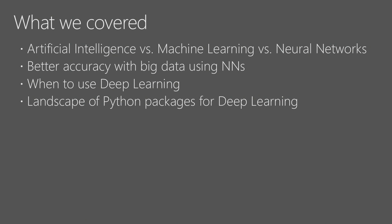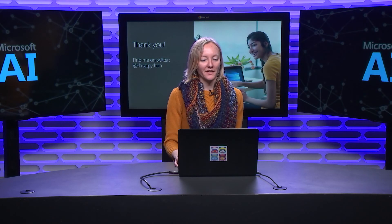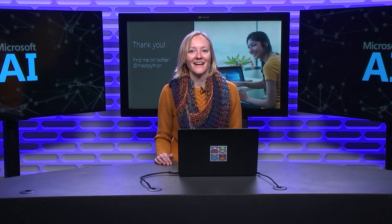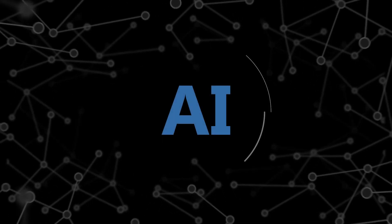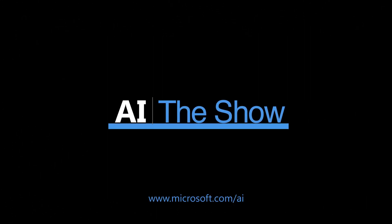Just to wrap up: artificial intelligence is the broad landscape; machine learning fits under that; then we have neural network architectures and deep learning algorithms that implement those architectures. We get much better accuracy with big data using neural networks. I showed you my lists of when to use classical machine learning versus deep learning, and introduced the Python packages for the deep learning space. I hope that was helpful — thank you so much. You can find me on Twitter at rheartpython, and thanks for listening to this episode of the AI Show.